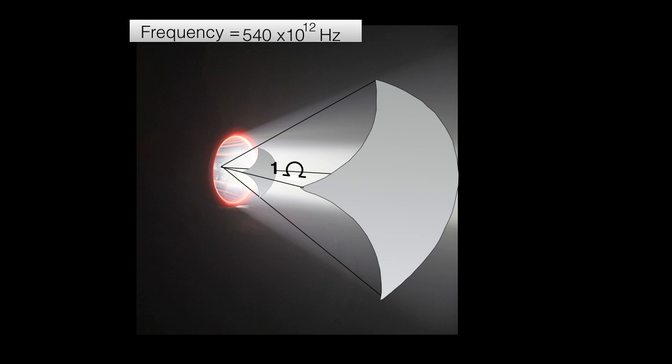is given by the ratio area upon square of radius, that is one upon one square, and that will give you one steradian.